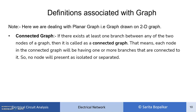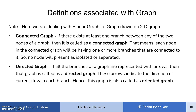There is always a connection between two nodes. The second definition is directed graph. If all the branches on a graph are represented with an arrow, then it is called a directed graph. This arrow indicates the direction of current flow in that branch. Hence, the graph which has this arrow is called a directed graph, and it is also called an oriented graph.